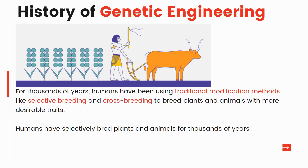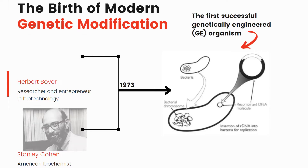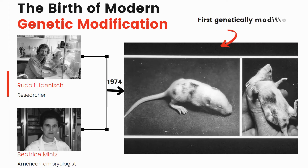When DNA was discovered, scientists began doing more genetic engineering experiments. In 1973, Herbert Boyer and Stanley Cohen worked together to engineer the first successful genetically engineered organism — the birth of modern genetic modification. They transferred a gene that includes antibiotic resistance from one strain of bacteria into another. Then, one year later, Rudolf Jaenisch and Beatrice Mintz introduced DNA into foreign mouse embryos.